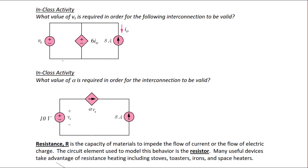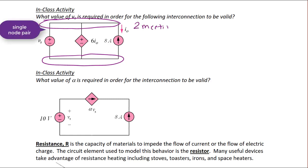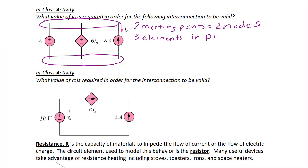In-class activity one: what value of VS is required in order for the following interconnection to be valid? Notice that this circuit has two nodes — we call this a single node pair. A node is where two or more circuit elements meet in a circuit. The three circuit elements are the independent voltage source, the current controlled voltage source, and the independent current source. When you have elements that meet at a node pair, we say that these elements are in parallel. Elements that are in parallel have the same voltage, meaning the same polarity and the same numeric value.